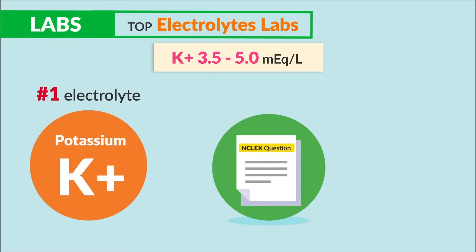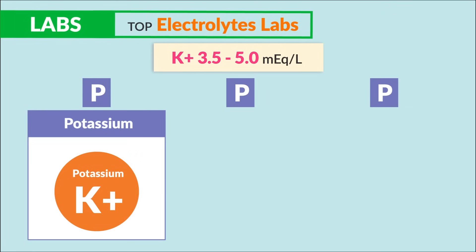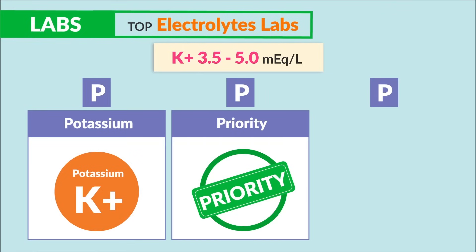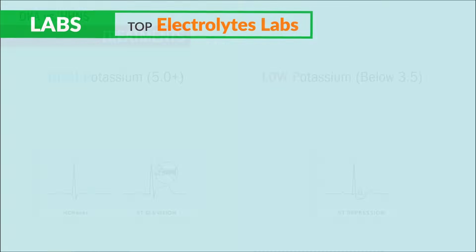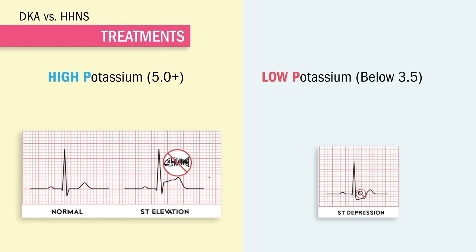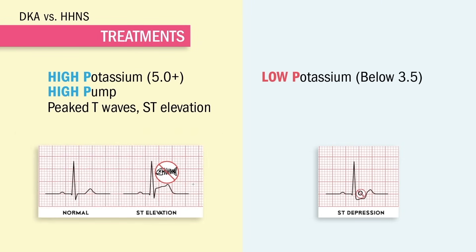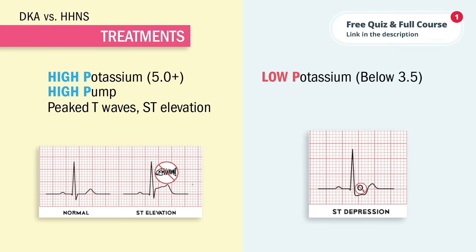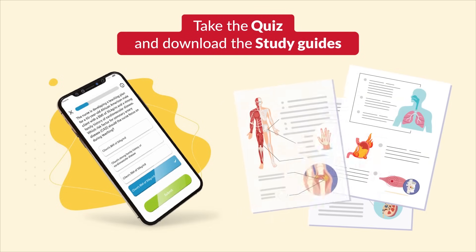Just think of the three P's of potassium: potassium is priority since it pumps the muscles. For high potassium — over 5.0 — we get high pumps, so we see peaked T-waves and ST elevations on an EKG. The exact opposite applies for low potassium. That wraps it up — don't forget to take your quiz and download the study guides.